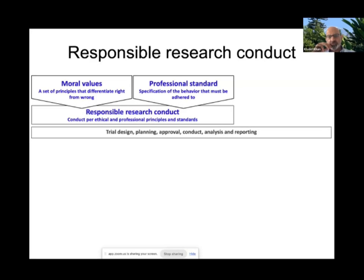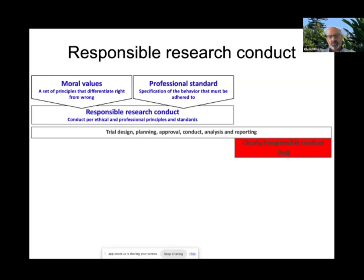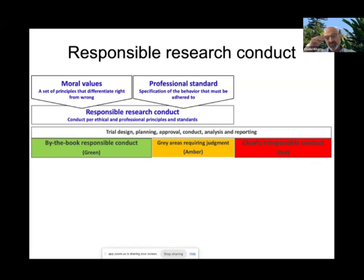If you look at a trial, it goes through designing, planning, approval, conduct, analysis, and finally reporting — this is the life cycle of a trial. Within this, we can have studies with clearly irresponsible conduct with respect to ethics or professional standards, or we can have by-the-book responsible conduct. There may also be gray zones, in part because the ethics and professional standards themselves may not be clear on some aspects, in which case even an expert committee may not be able to give a clear answer.